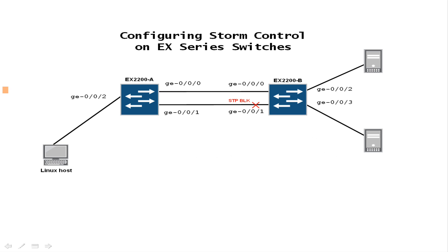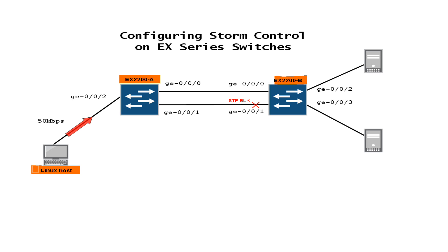In our lab setup we have two switches – A and B. A Linux host connected to switch A is used as a source of broadcast, unknown unicast, or multicast traffic.